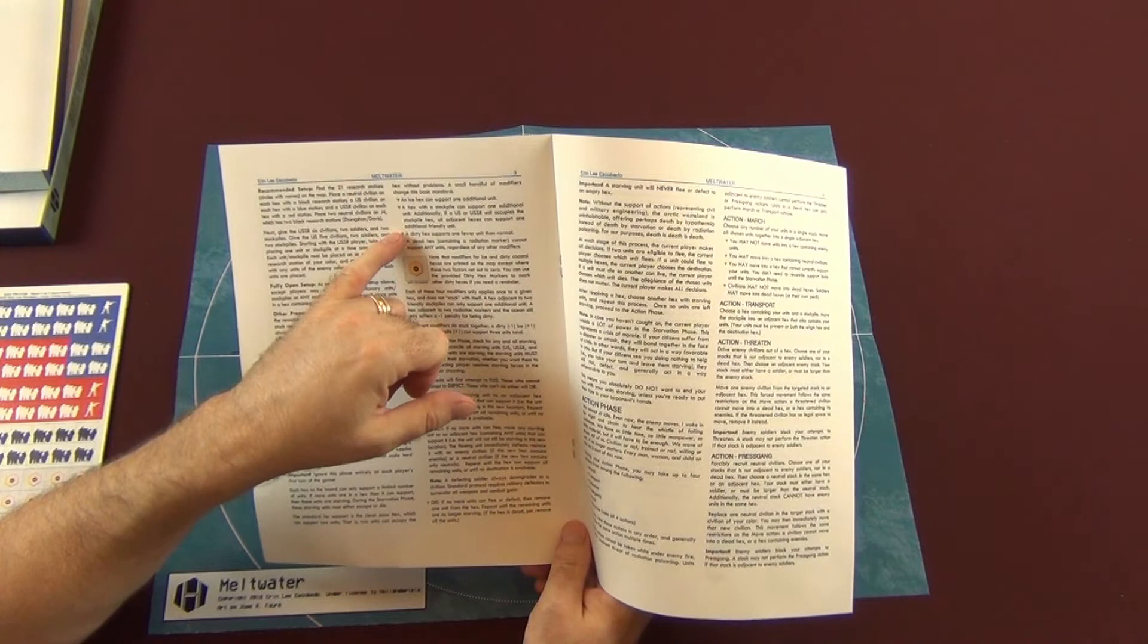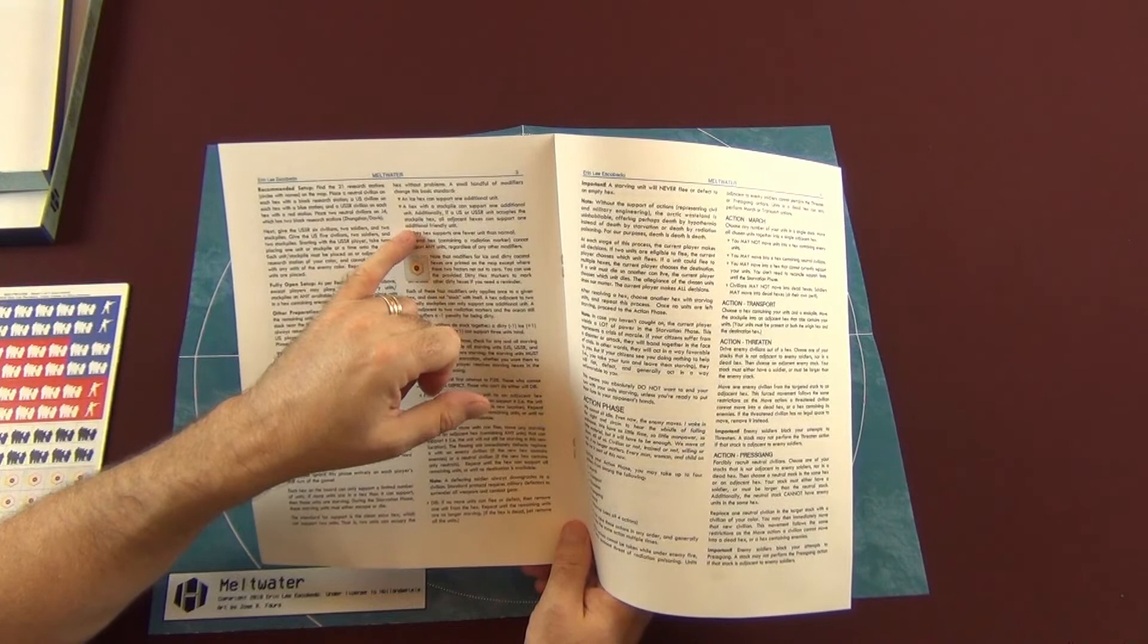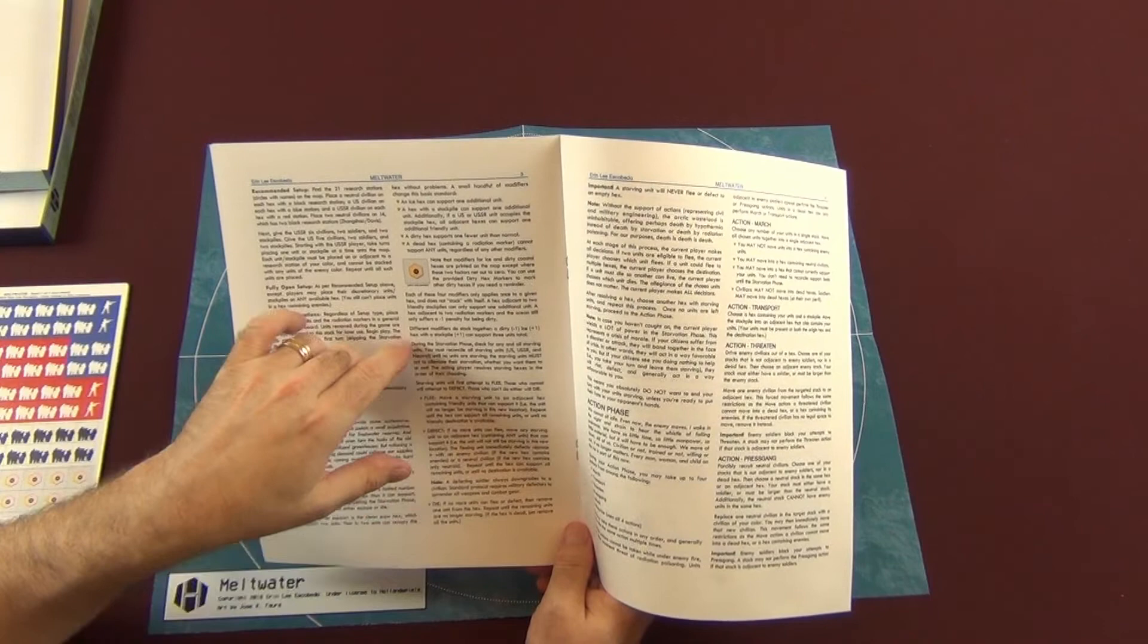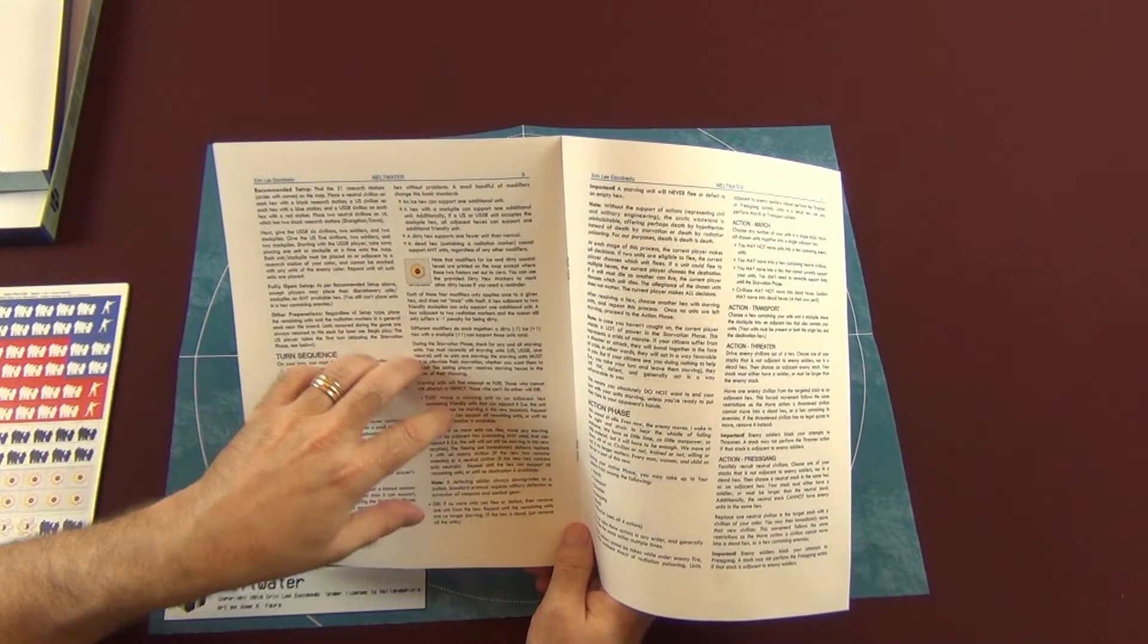A hex with stockpile can support one additional unit. And then if the US or USSR unit occupies a stockpile hex, all adjacent hexes can support one additional friendly unit. So there's some tactical setup with where you put your stockpiles, that way you can actually have more forces around it or more people around it as well.